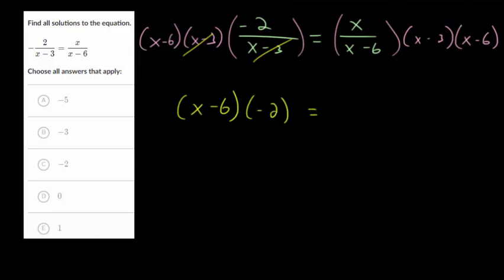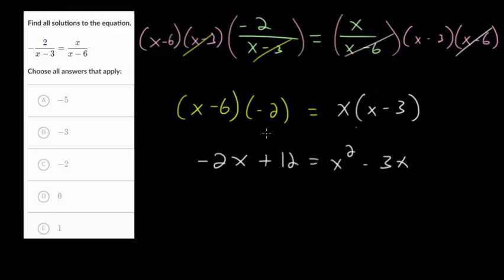And on the right side, the x minus 6 will cancel out. And you get x here times x minus 3. And we'll just need to distribute the negative 2 to this and the x to that. And so on the left-hand side, we get minus 2x plus 12. And on the right, we get x squared minus 3x. So we have a quadratic.